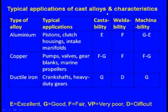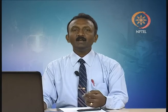Typical applications and characteristics of cast alloys: Aluminum alloys are used for pistons, clutch housings, and intake manifolds. Cast ability is excellent, weldability is fair, and machinability is good to excellent. Copper alloys are used for pumps, valves, gear blanks, and marine propellers. Cast ability is fair to good, weldability is fair, and machinability is fair to good. Ductile iron is used for crankshafts and heavy duty gears. Cast ability is good, weldability is difficult, and machinability is good.